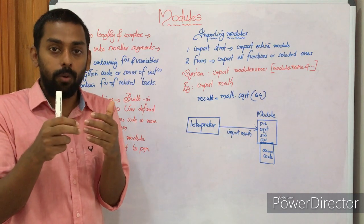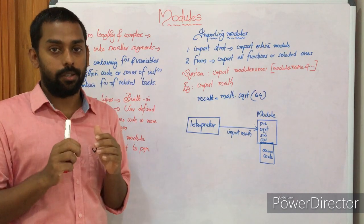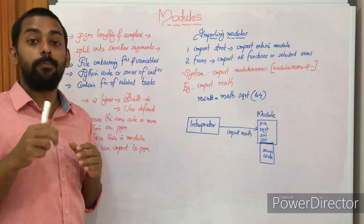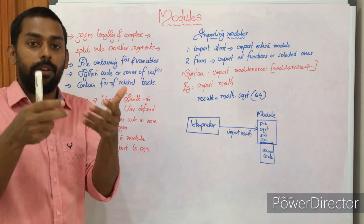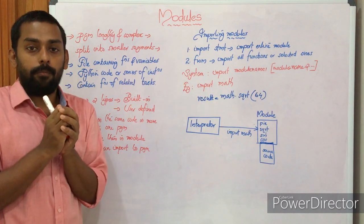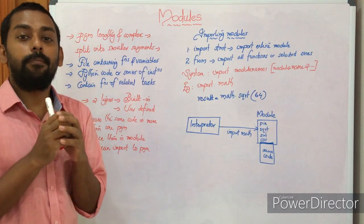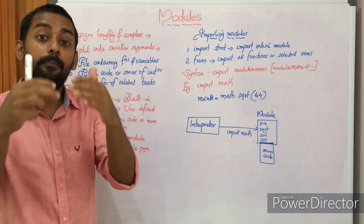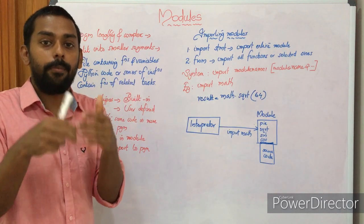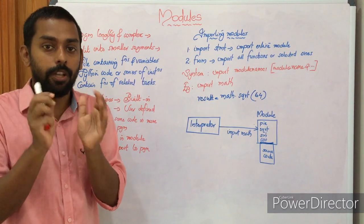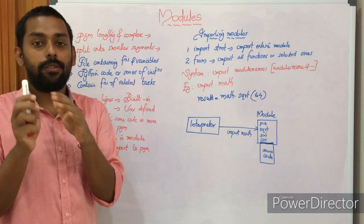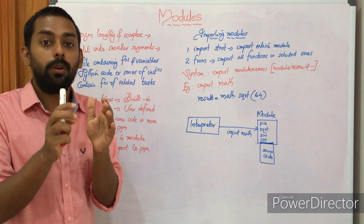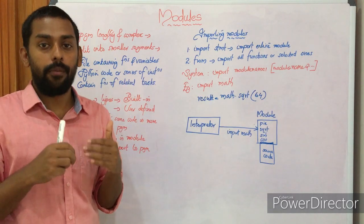There are two types of modules available in Python. One is built-in module, and second is user-defined module — just like built-in functions and user-defined functions. A built-in module, for example, is math. Math is a built-in module in Python. In the math module we will have a number of functions such as sin, cos, tan, sqrt, log. Math module is a predefined module available in Python — we just have to use it.